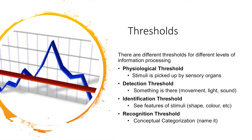There are different thresholds for different levels of information processing. The physiological threshold is the absolute threshold for sensory organs to pick up a stimulus. The detection threshold is when we can identify that something is there but we might not necessarily be sure of what it is — movement, light, or sound. The identification threshold is where we can identify the features of the stimuli such as shape and color. And the recognition threshold is where we can conceptually categorize the stimulus, such as being able to name what we can see, hear, or taste.